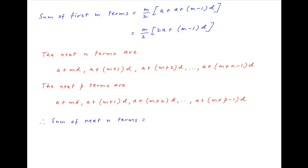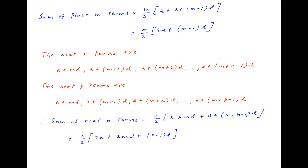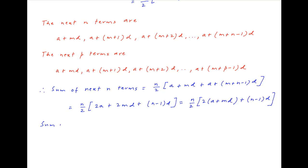The sum of the next n terms is equal to n upon 2 times in brackets the first term plus the last term of that series, which equals n upon 2 times in brackets 2a plus 2md plus n minus 1 times d. This can also be written as n upon 2 times in brackets 2 times a plus md, plus n minus 1 times d.